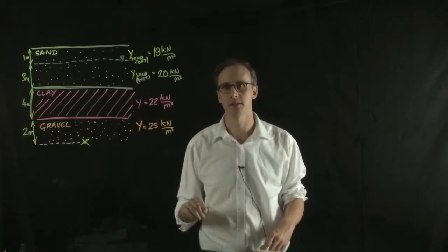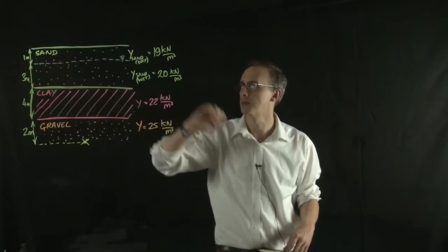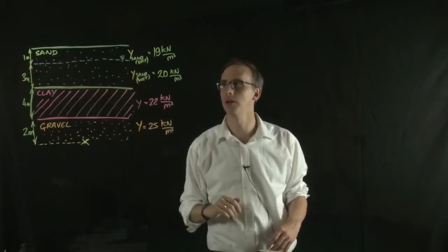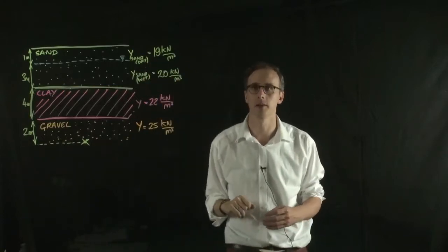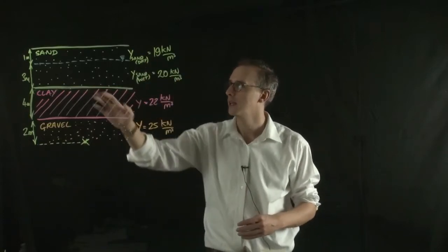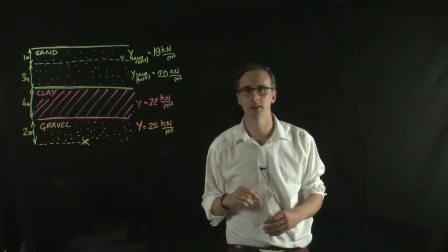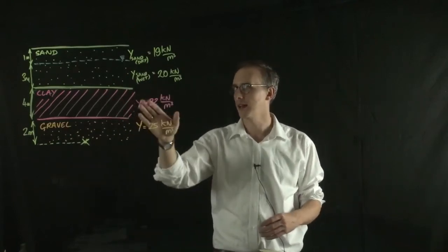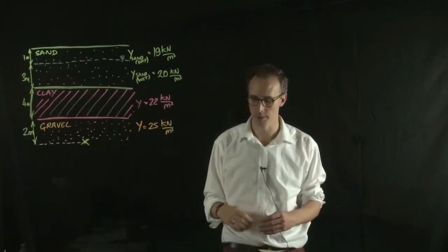Let's say we know the unit weight of each of these layers. We have a water table that's 1 meter below the ground, and the sand above that water table has a unit weight of 19 kilonewtons per meter cubed. The unit weight below that water table is 20 kilonewtons per meter cubed. The clay has a unit weight of 22, and the gravel 25 kilonewtons per meter cubed.